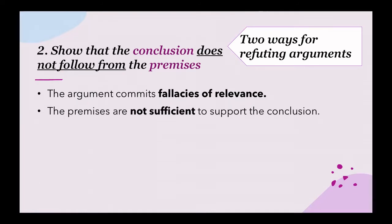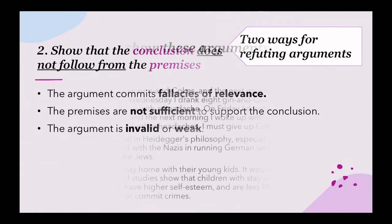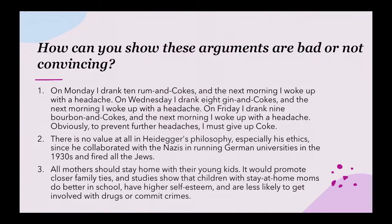Or we can show that the premises are not sufficient enough to support the conclusion. And we can show that it is very possible and very likely that the premises are true, but the conclusion is false. We have some arguments here, and how can you show these arguments are not convincing?